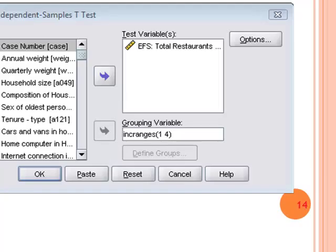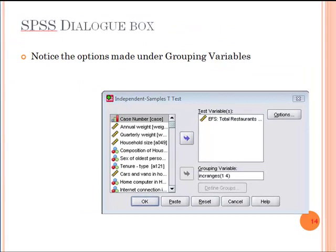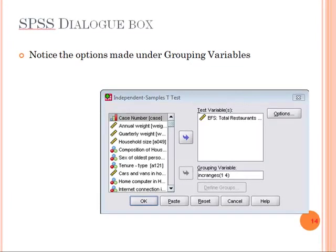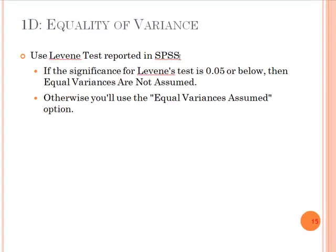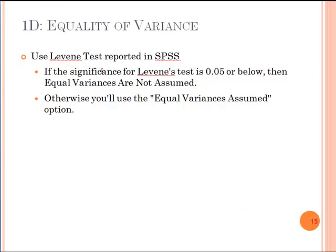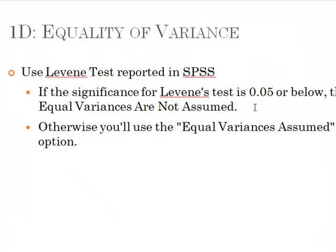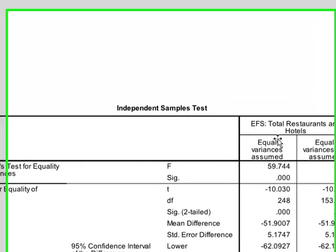If the p-value is less than 0.05 you reject the null hypothesis which is that the both spendings for the lowest and the highest quartile is the same. If you get a p-value of greater than 0.05 then you fail to reject the null hypothesis. You can use the Levene test and if the significance for Levene test is 0.05 or below then you cannot assume equal variances. If the Levene test value is greater than 0.05 you will assume equal variances.